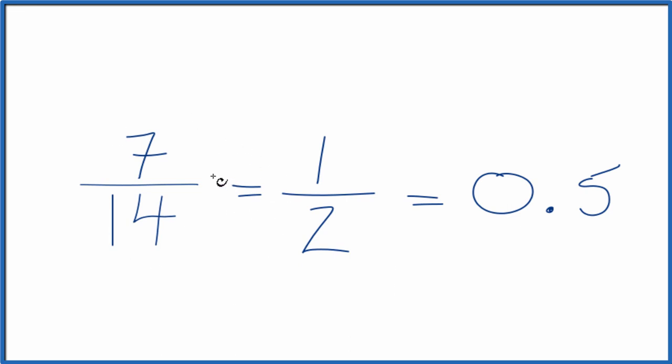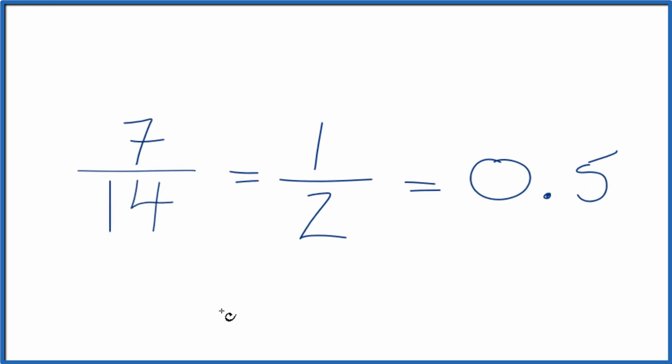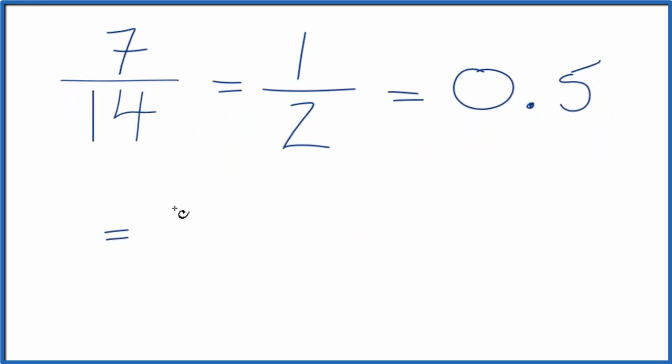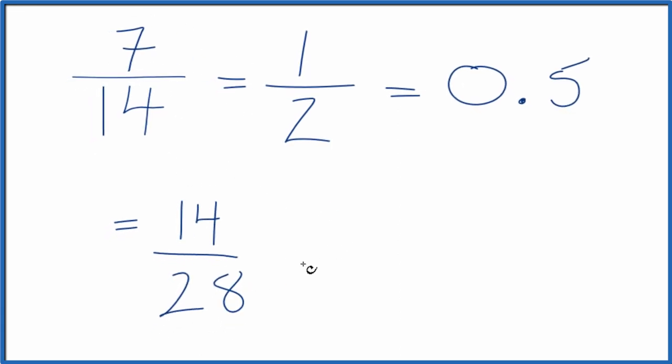Instead of division, we could multiply 7 over 14. So we could multiply 7 times 2, that equals 14. And 14 times 2 is 28. That's another equivalent fraction here for 7/14.